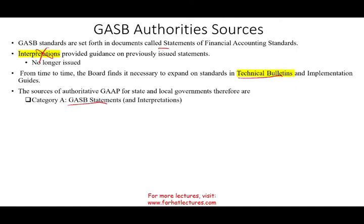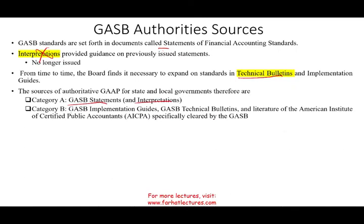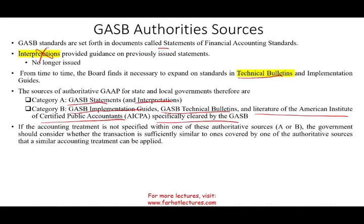Category A is GASB statements and any old interpretations that still exist. Category B is GASB implementation guides, GASB technical bulletins, and literature from the American Institute of Certified Public Accountants that is specifically cleared by GASB. The first thing you do is look at Category A — if you have an answer there, you go with it. If not, you look at Category B. If there's no specified guidance from either source, the government looks at similar transactions to determine how to book that transaction.